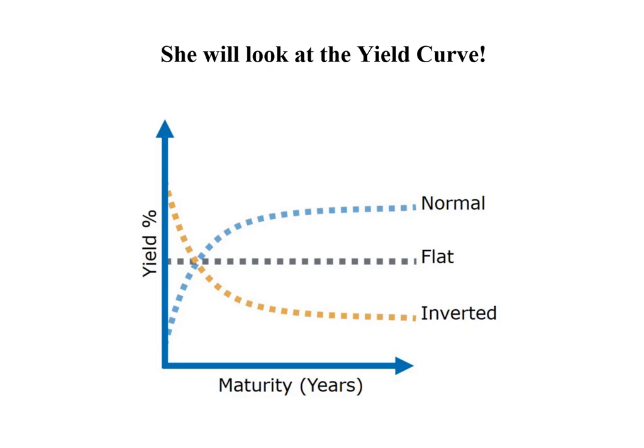If the yield curve is flat, then the yield remains fixed regardless of the number of years to maturity. And in an inverted yield curve, the longer the term of the bond, the lower the yield. So our investor looked at the yield curve, saw that it was normal or rising, and made the decision to get out of the long-term bond and into the short-term one-year bonds in order to increase her overall return on investment.